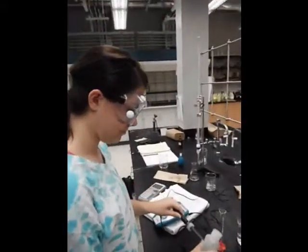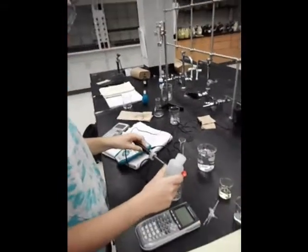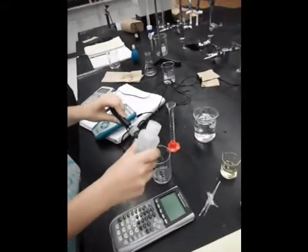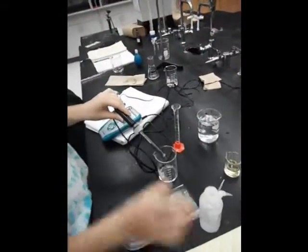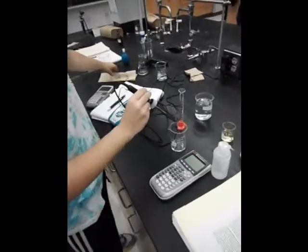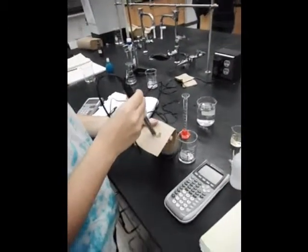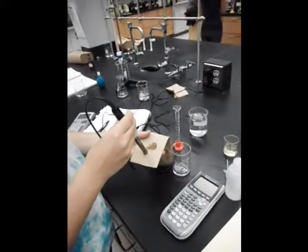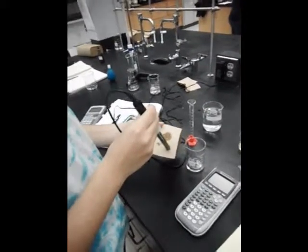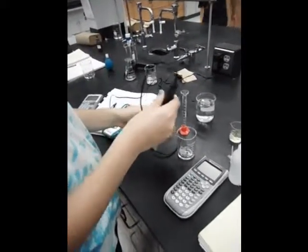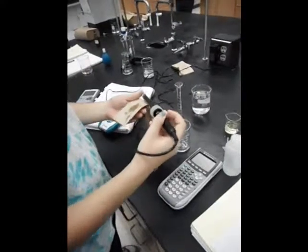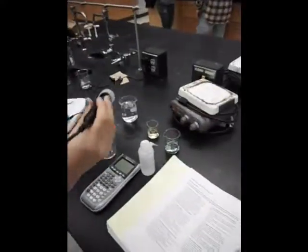Once the pH is calibrated to read the 4 through 7, you're going to want to clean it off again with the deionized water and dab it with a paper towel. Then you're going to re-read the pH buffer 7 to make sure that it's able to read the pH properly.